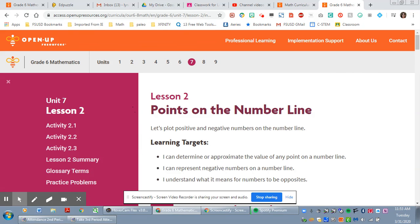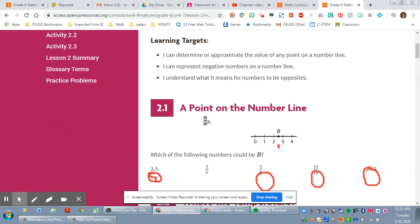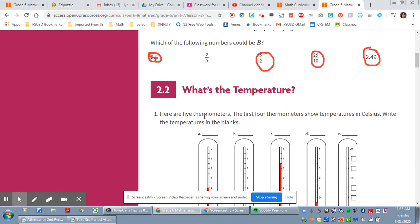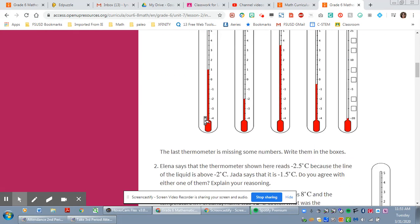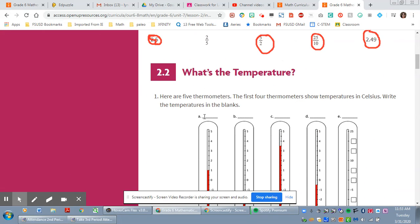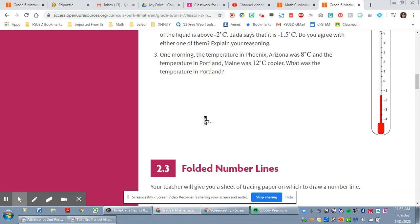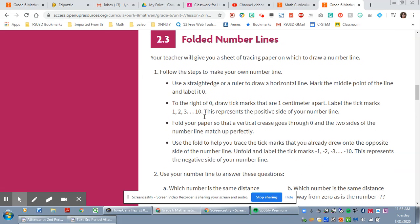And then find Unit 7, Lesson 2, and you sign in as a student, and it has all of this here for you, and you can just look at the screen and write your answers down on paper. You do not have to turn in your Practice Problems. Tomorrow you will have the answers to the Practice Problems, and you should be correcting those. What you do need to turn in is the Cool Down, and that will be in Google Classroom as well. All right, have a great day.